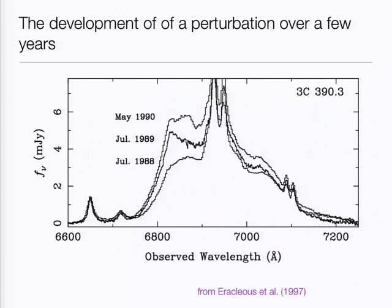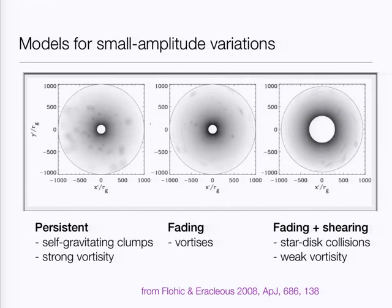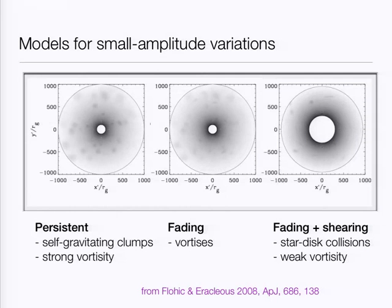We've also caught in the act the development of this perturbation. These are spectra taken one year apart, and you can see how one side of the line takes off — and this illustrates the danger of mistaking one of these strong blue peaks for a single-peaked but offset line profile. We also looked at the small amplitude variability by slicing the profile into velocity slices, taking power spectra along each slice, and finding low-frequency noise. To interpret these variations, we made models for disks with spots representing different flavors of vorticity, star-disk collisions, and self-gravitating clumps. The spots are in the outer parts of the disk, suggesting these disks are massive and self-gravitating — capable of developing either local self-gravitating clumps or large-scale instabilities like spiral arms.